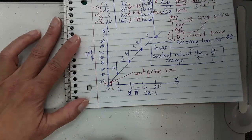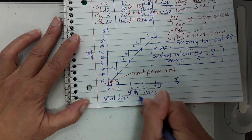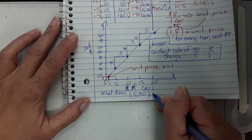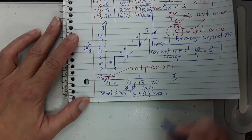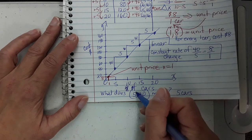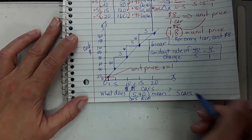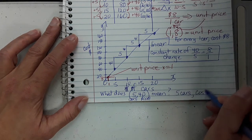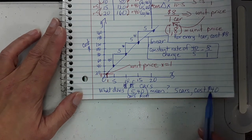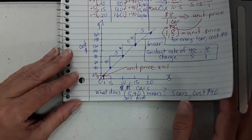What does the point (5, 40) mean? Well, X is cars and Y is cost in money, so it means 5 cars cost $40. Similarly, what does (0, 0) mean? It means 0 cars cost $0 — you have no cars, no dollars.